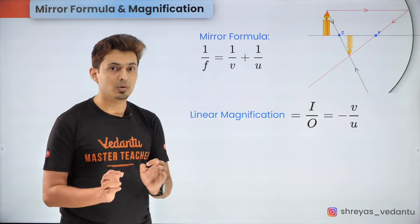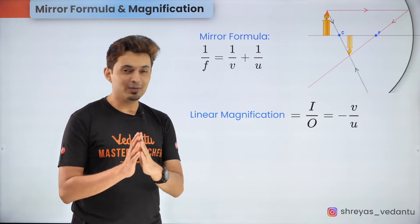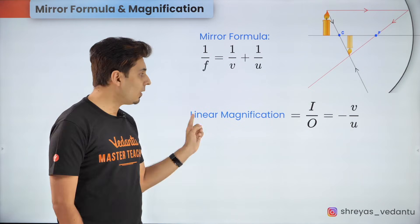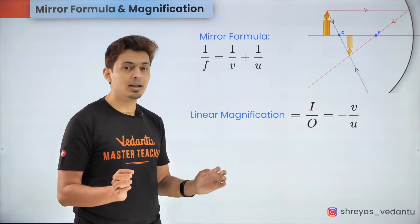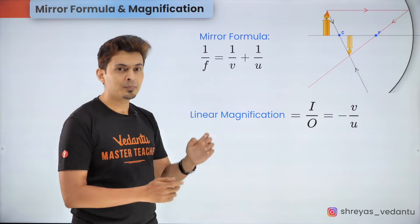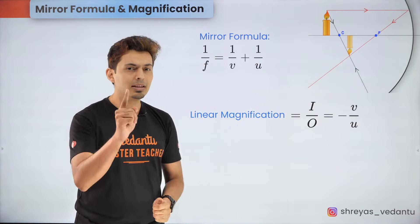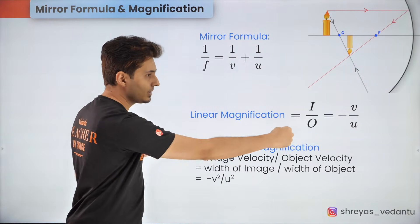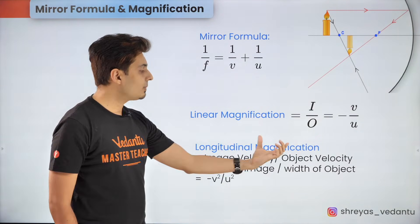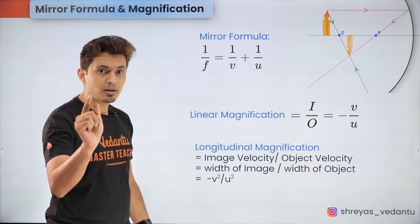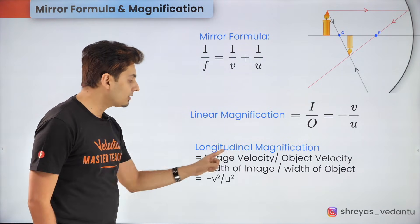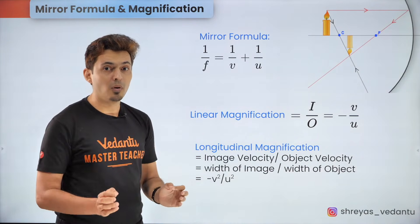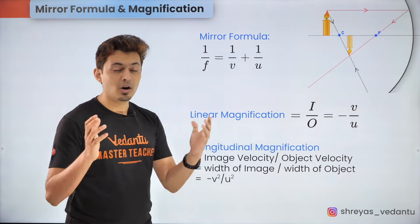If the magnification ratio is positive, the image is erect; if negative, the image is inverted. If the magnitude is more than one, the image is magnified; if less than one, it is diminished. Also remember, the image can be magnified along the principal axis, and the width of the image upon the width of the object has the same ratio as the velocity of the image upon the velocity of the object. The formula for this is negative v²/u², and this can be used to solve problems involving motion of the object or image.